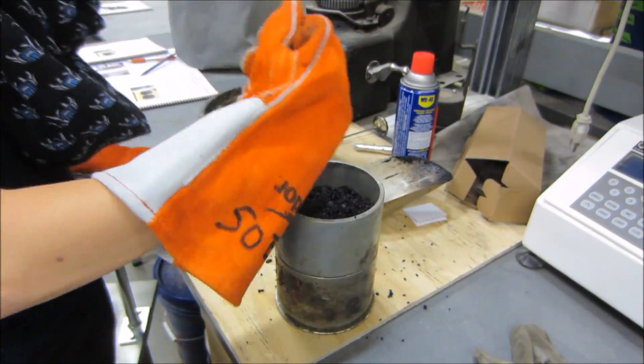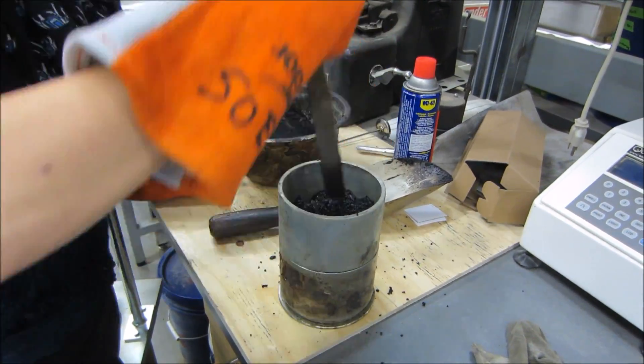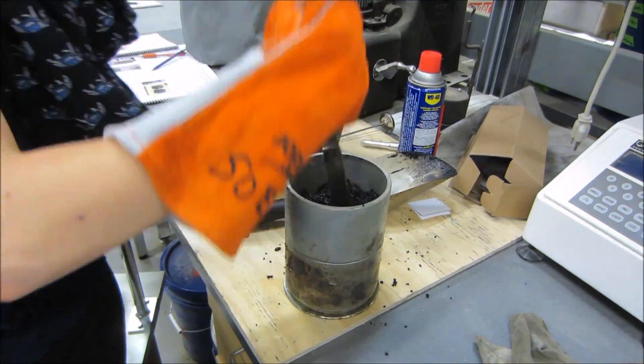Spade the specimen with a spatula 15 times around the perimeter and 10 times in the middle. Ensure that the spade reaches the bottom of the mold for every stroke.